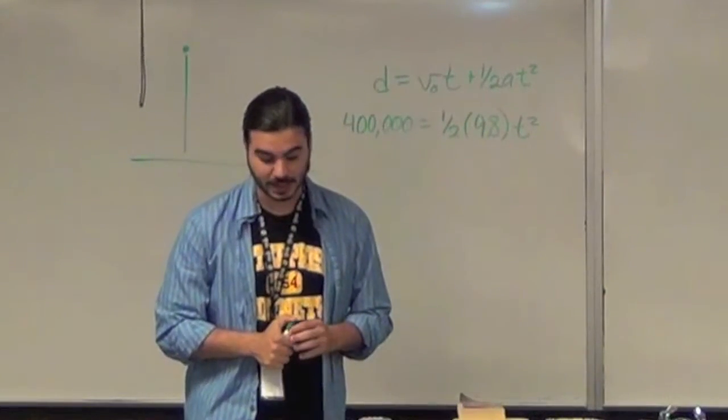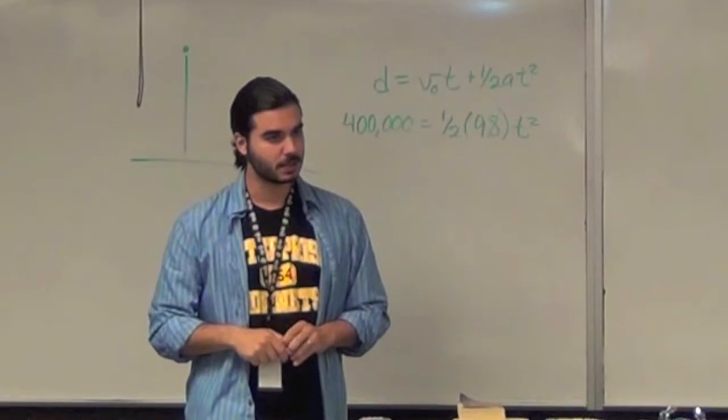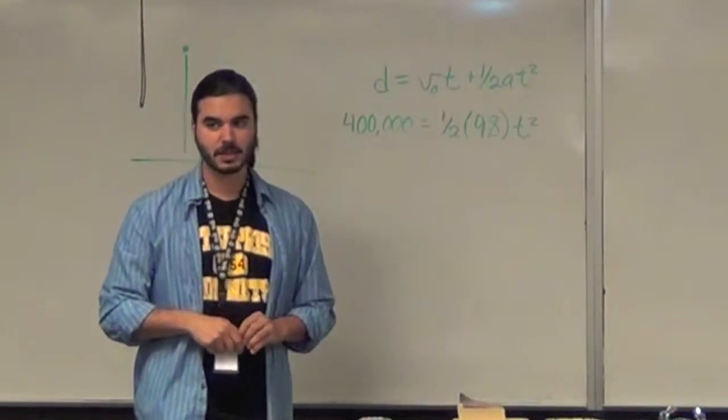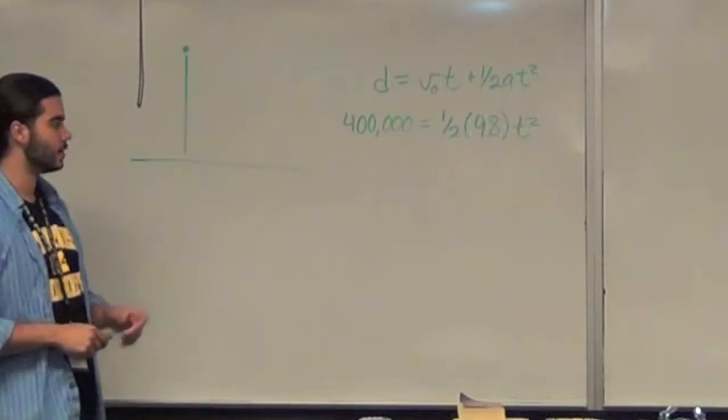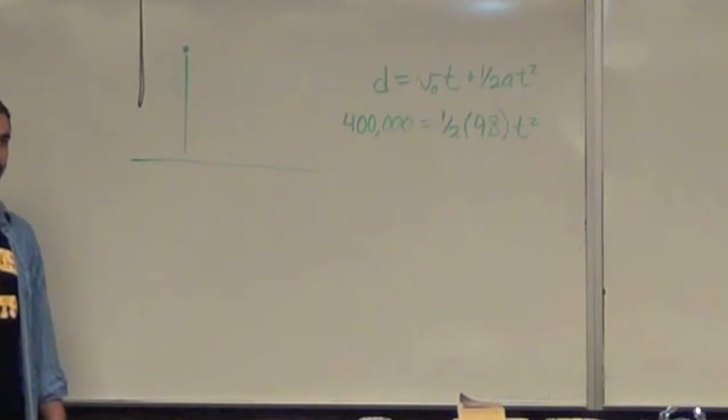If you solve this equation for time, you end up getting 286 seconds, which is 4.76 minutes. It would take less than 5 minutes for the space station to crash into the Earth if it really were in freefall. So why doesn't it? I'm giving you guys the answer that it is in freefall.